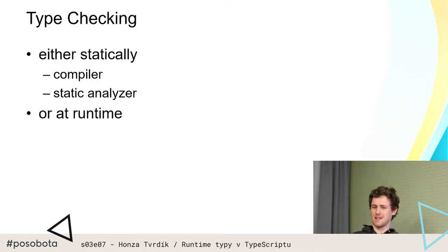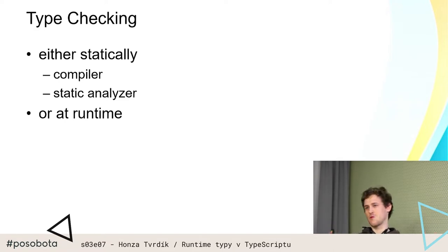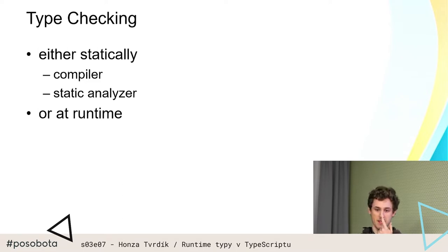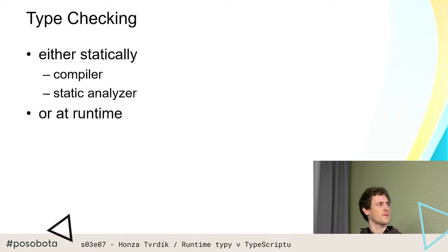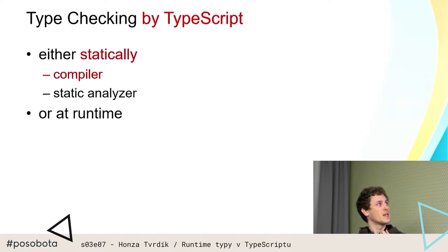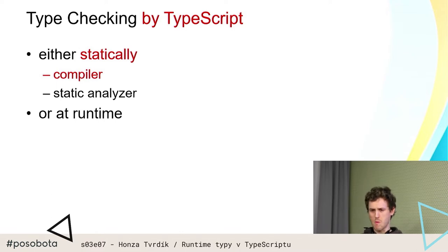Typy lze kontrolovat na dvou místech: buď staticky, to typicky dělá kompilátor, když ten jazyk má nějaký fancy kompilátor, nebo třeba v PHP, který to staticky analyzuje. Nebo je lze kontrolovat v runtimeu. PHP samotný kontroluje typy v runtimeu, TypeScript samotný kontroluje typy staticky pomocí TypeScript kompileru.